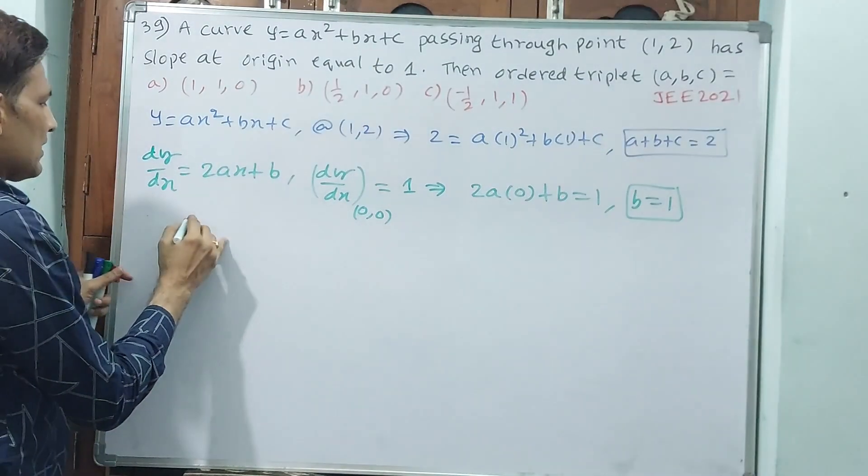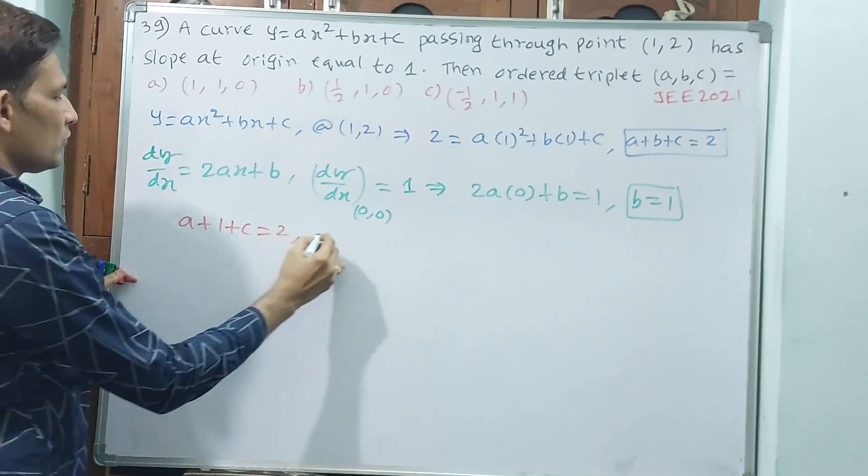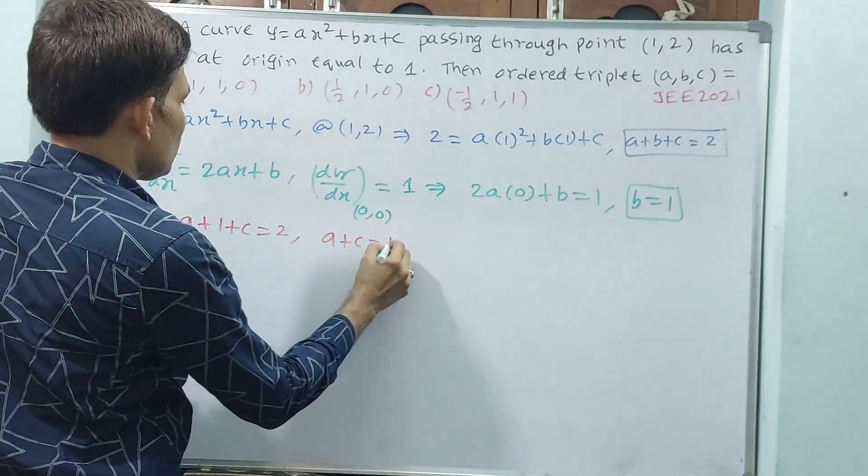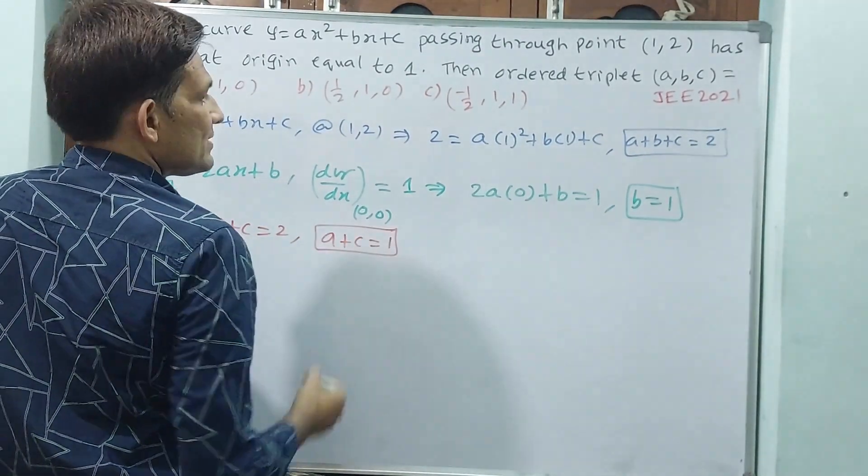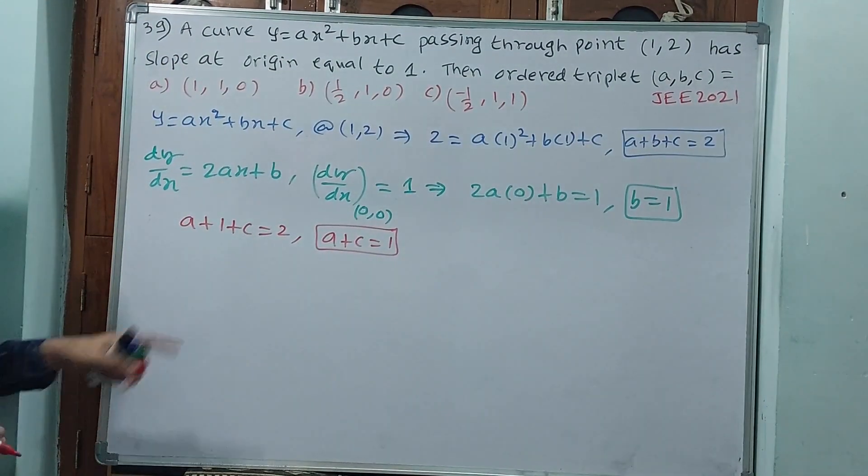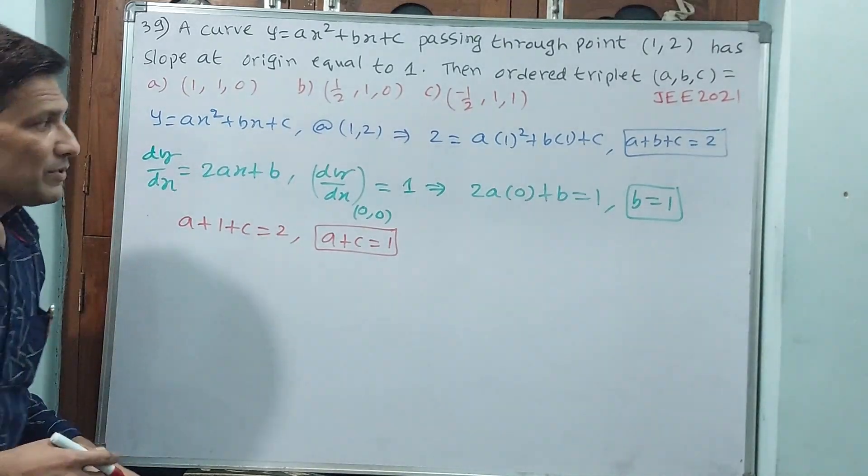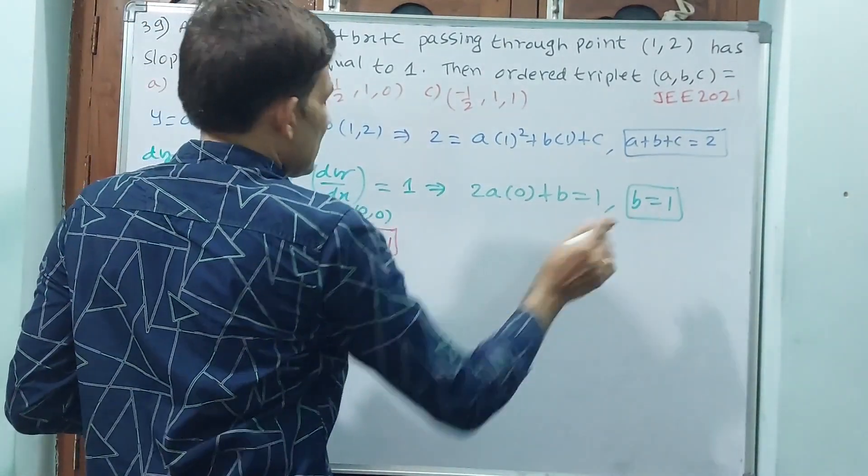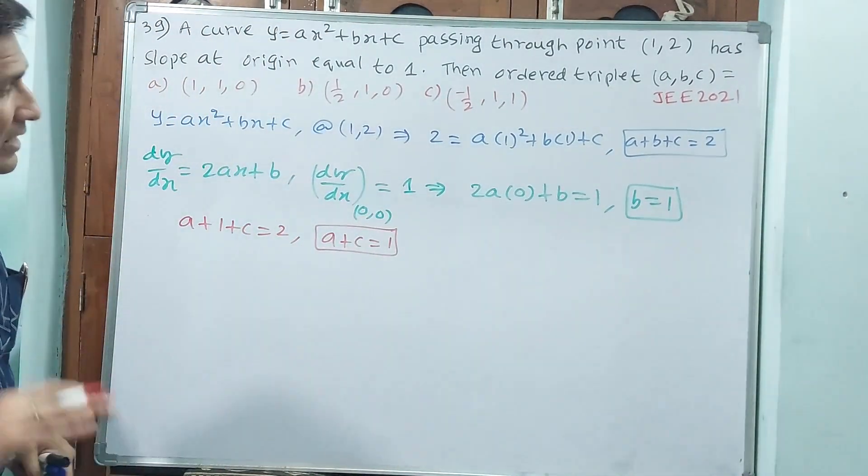Then go back to that equation: a + 1 + c = 2, or else a + c = 1. In a + b + c = 2, in place of b keep 1. That means b = 1, and a + c = 1.